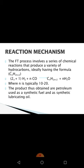Now let's discuss the reaction mechanism. The Fischer-Tropsch process involves a series of chemical reactions that produce a variety of hydrocarbons, ideally having the formula CₙH₂ₙ₊₂. The reaction is: (2n+1) H₂ + n CO → CₙH₂ₙ₊₂ + n H₂O. This uses water gas, also called coal gas or down gas, as the reactant.